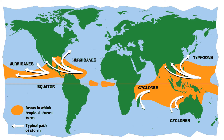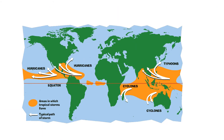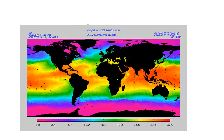Tropical storms have different names depending on the part of the world where they occur. In the Atlantic we refer to them as hurricanes, in the Indian Ocean they're referred to as cyclones, but in the Pacific Ocean — such as where the Philippines are located — we refer to them as typhoons.